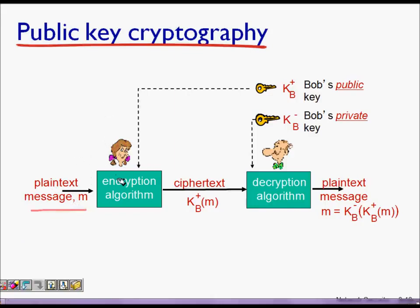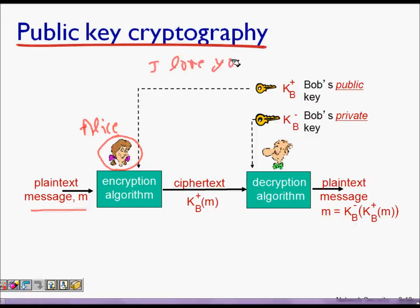Let's say this is Bob and this is Alice. Alice wants to send a secret message to Bob — something like 'I love you' — and she does not want others to read it. She wants it encrypted to something like dollar-hash-dot so that even if someone intercepts the message, it cannot be understood.